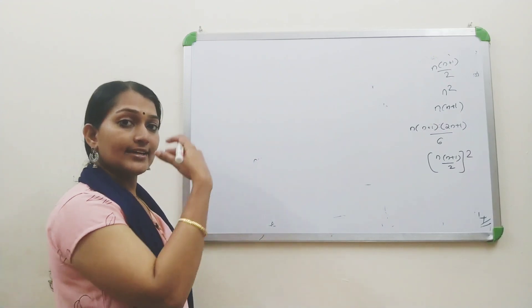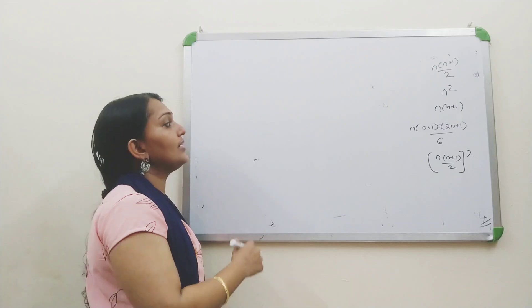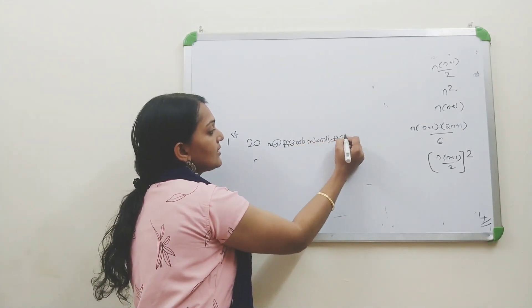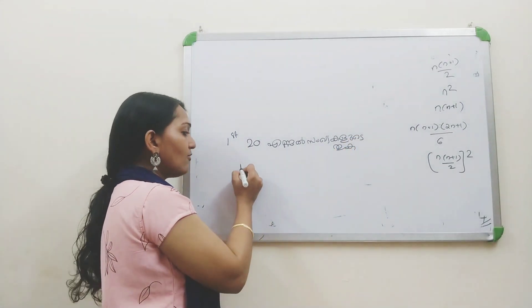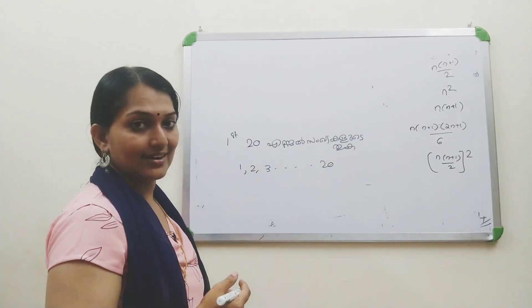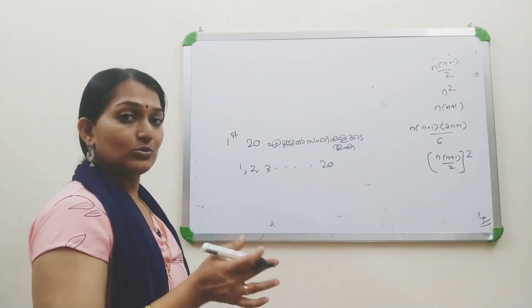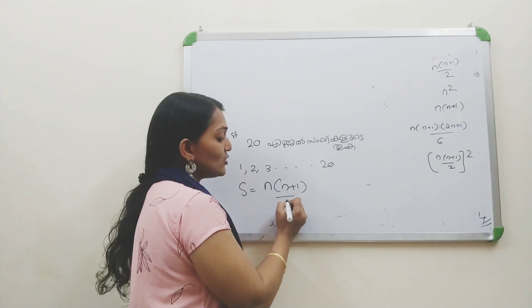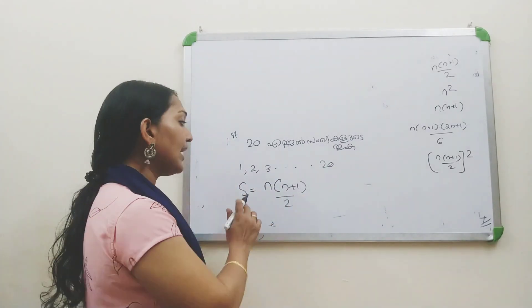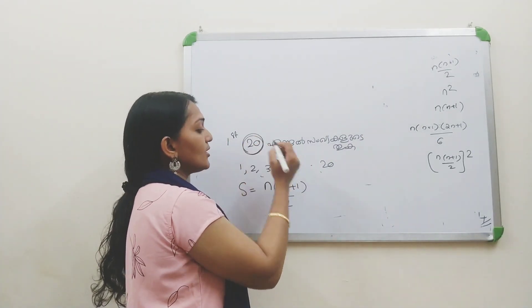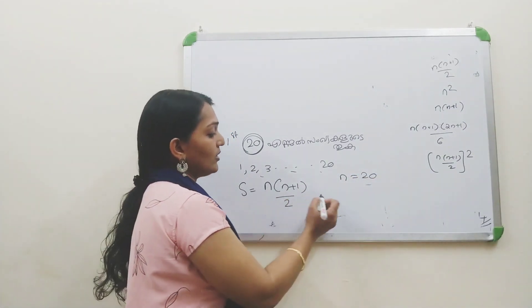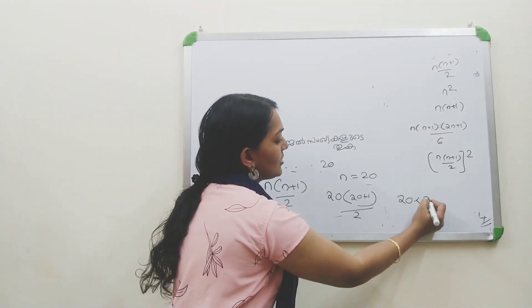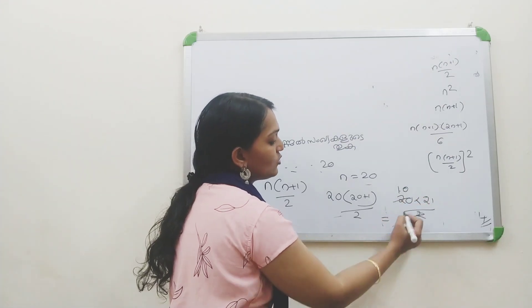The next type of question: we need to learn the equation for the sum of first n natural numbers. The formula is n × (n+1) / 2. For example, the sum of the first 20 natural numbers: n = 20, so 20 × 21 / 2. The 2 cancels to give 10 × 21, which equals 210. That is the answer.